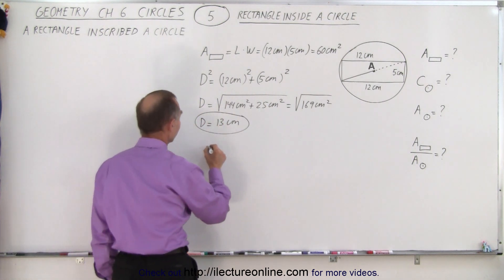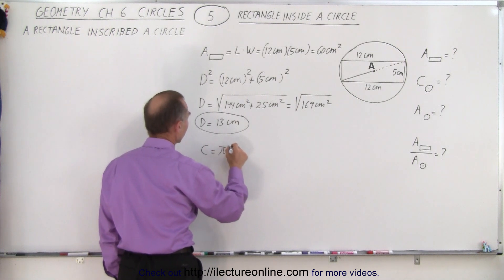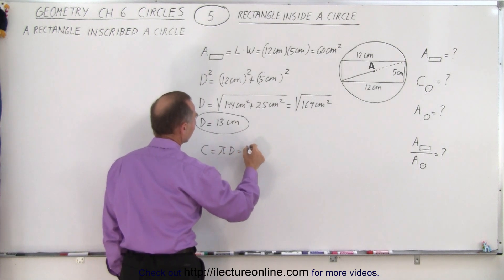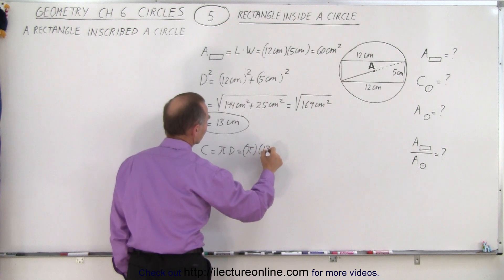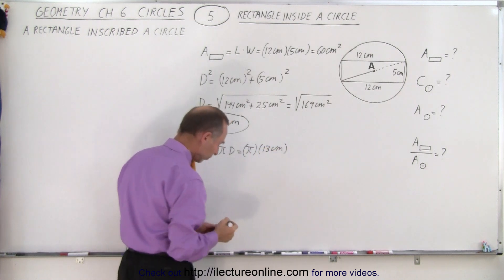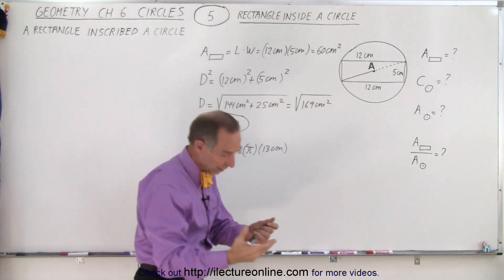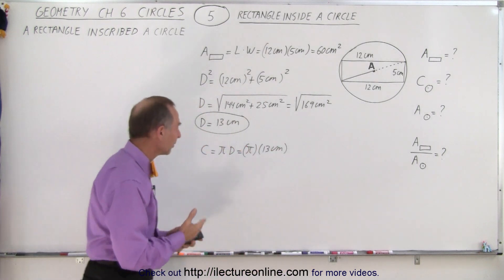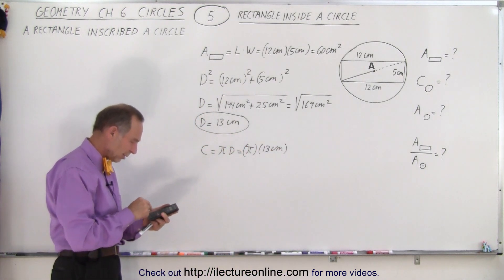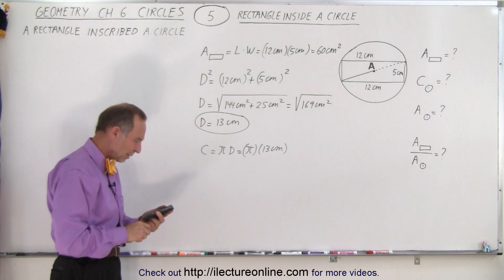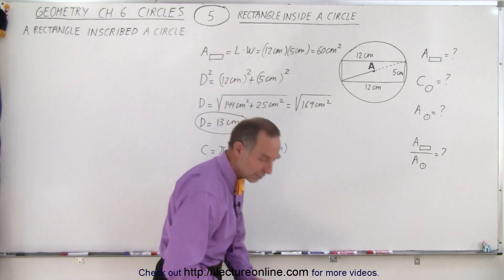And since the circumference is equal to Pi times the diameter, that is equal to Pi times 13 centimeters. Of course, Pi is 3.14159, none and none and none. But if you have a calculator, you just simply take 13 times the number Pi, and you get 40.84 centimeters.